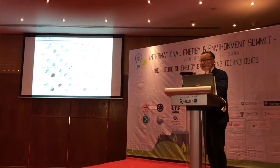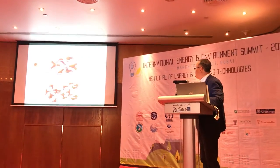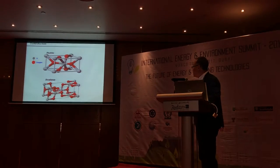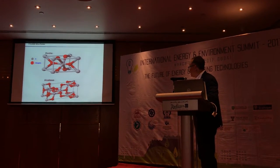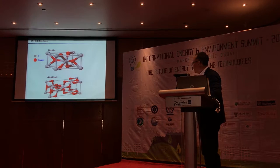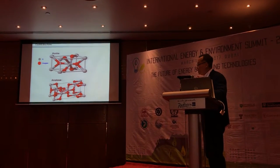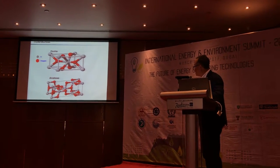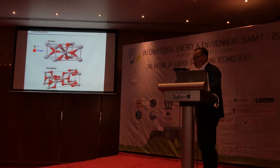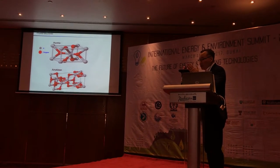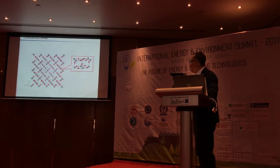In titanium dioxide, there are three different crystalline phases. This is the rutile phase, the rutile crystalline, and this is anatase. If you reduce the rutile phase and anatase, we can reduce the band gap and observe more visible light.